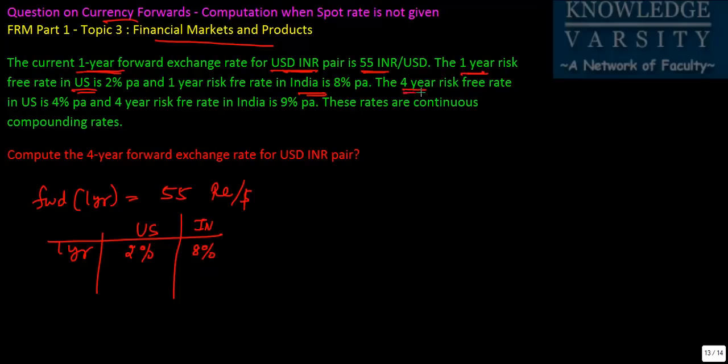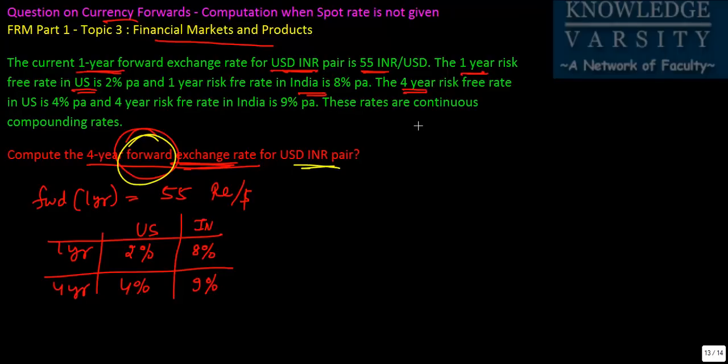Also, they have given you the four year rate. Four year risk free rate is given over here is 4% per annum and they have given this as 9% per annum. Not much of a maturity premium that you are getting. These are the two rates that they have given. They are asking us to find out the four year forward exchange rate.